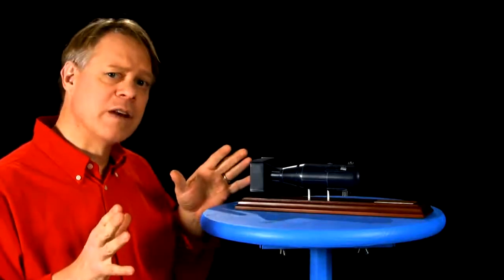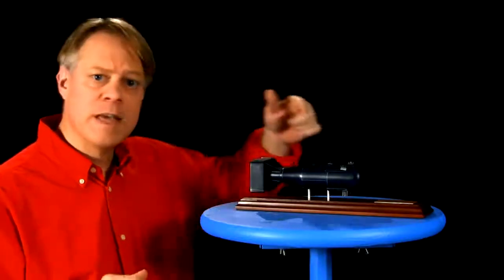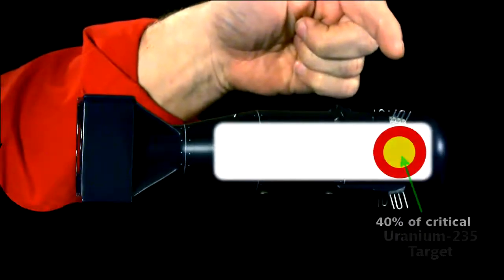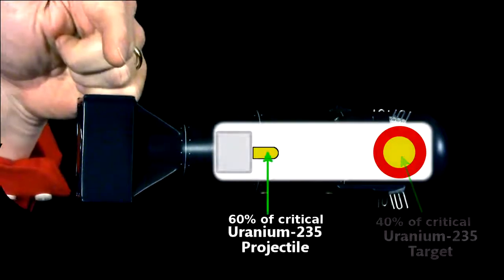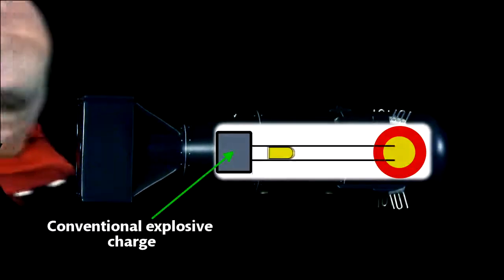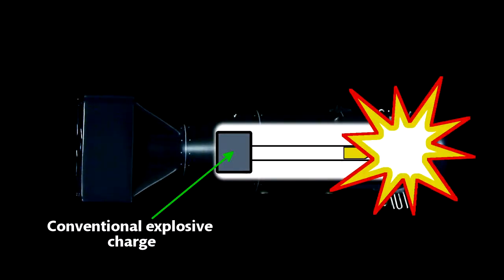The bomb's designers divided the amount needed into two pieces. At the tip, they placed about 40% of the necessary uranium. They loaded the remaining 60% at the other end. A conventional explosion drove the projectile into the target, initiating the nuclear explosion.